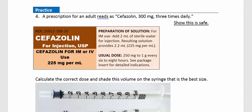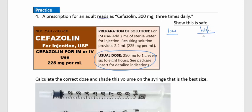Practice 4. A prescription for an adult reads Cefazolin, 300 mg, 3 times daily. Checking safety: the usual dose ranges from 250 mg to 1 gram every 6 to 8 hours, meaning we can give 3 to 4 times per day — up to 4 grams total. On the low side: 250 mg three times a day is 750 mg. 300 mg three times daily equals 900 mg, which falls right between the low and high. Yes, this is safe.